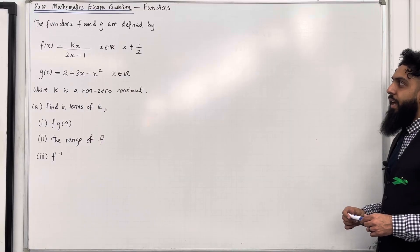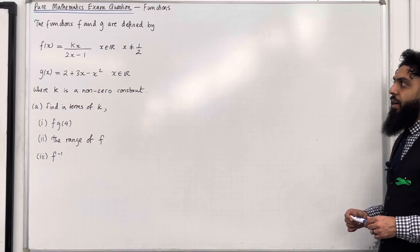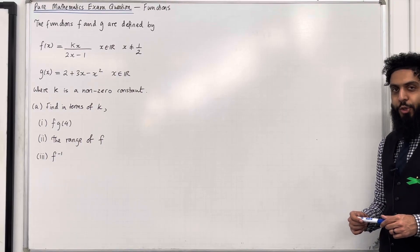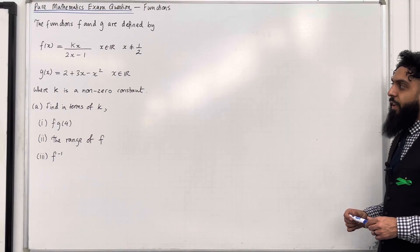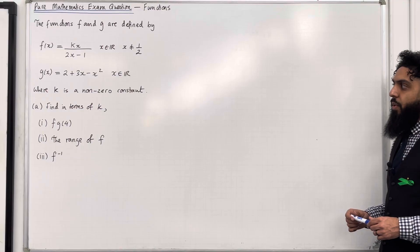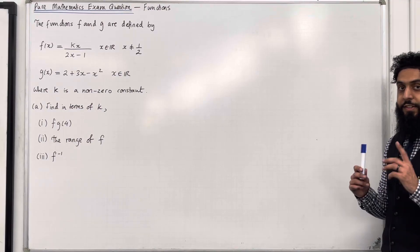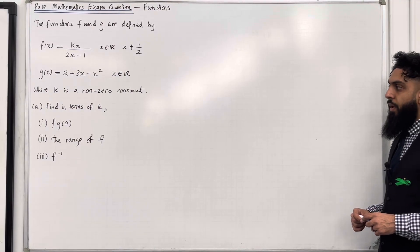Here is the exam question. The functions f and g are defined by f of x equal kx over 2x minus 1, where x is any real number and x is not equal to 1 over 2. g of x equal 2 plus 3x minus x squared, x is any real number, where k is a non-zero constant.